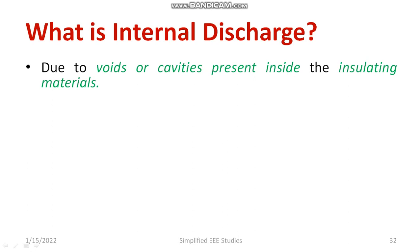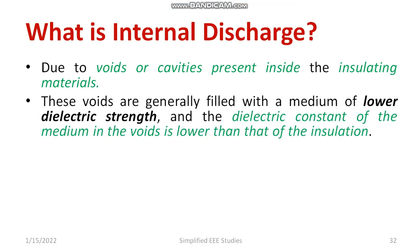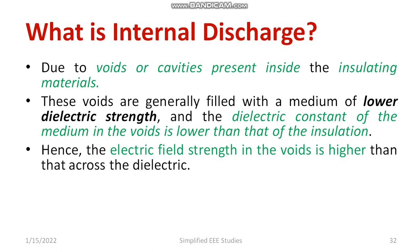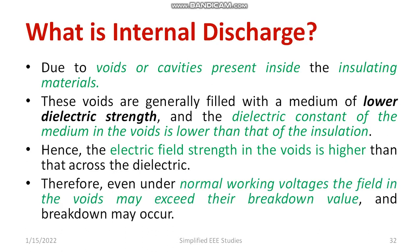First, you need to understand what internal discharge is. Internal discharges happen due to voids or cavities which mainly occur in solid dielectric material. When a void is present inside the solid dielectric material, there is a difference in dielectric constant — the dielectric constant of the void will always be less than that of the solid dielectric material. Because of that, there is a change in electric field strength, which can ultimately exceed the breakdown strength. Such dielectric breakdown is known as internal discharge, and it occurs due to voids, cavities, or cracks inside the insulating material.